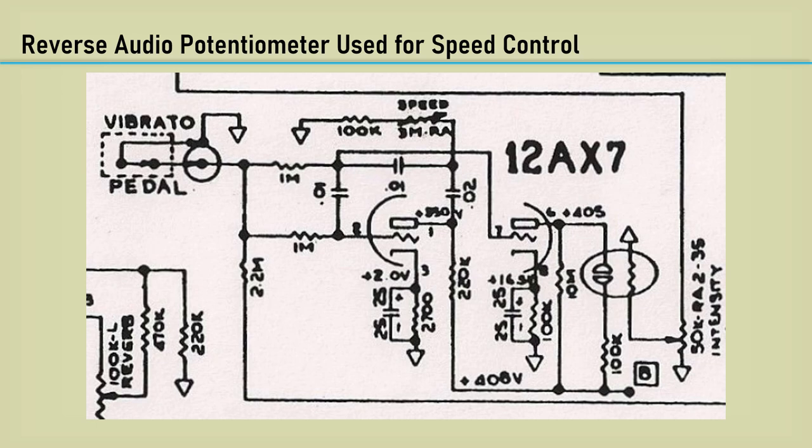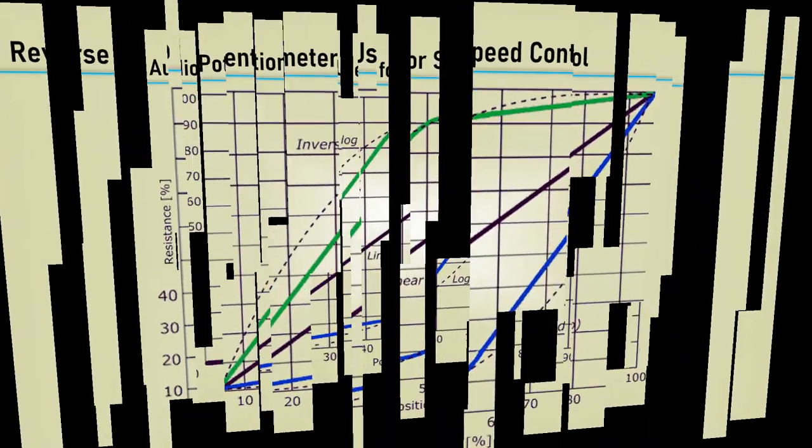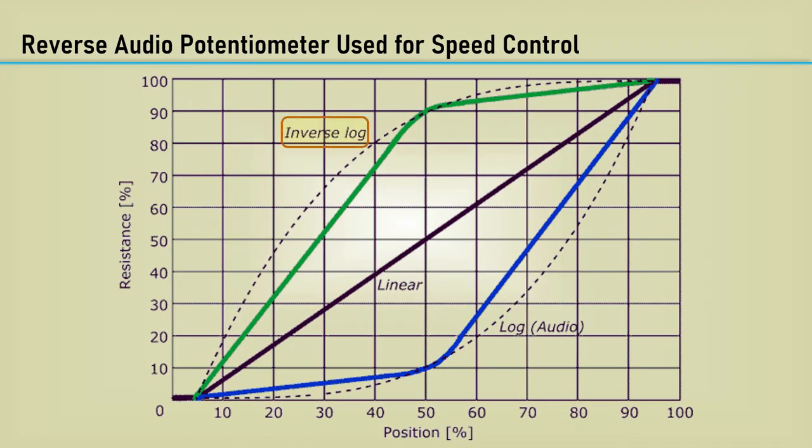You may not have noticed, but in the Fender schematic, the 3 meg speed pot has the designator RA, which stands for reverse audio. A reverse audio, or sometimes called inverse log pot, is used to compensate for that non-linearity as shown in green. Click the link above to watch the video on the audio taper potentiometer.